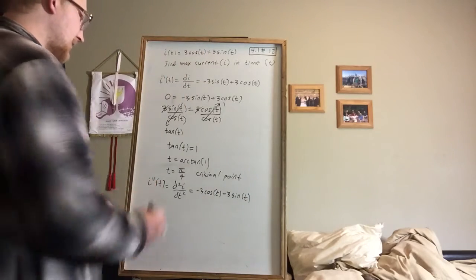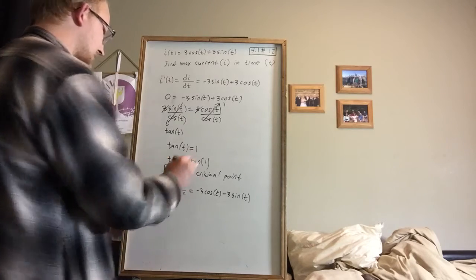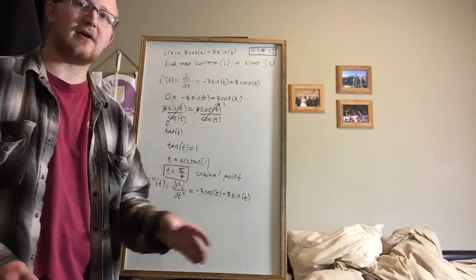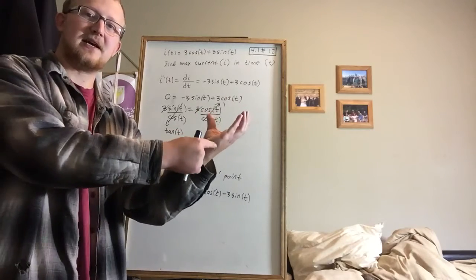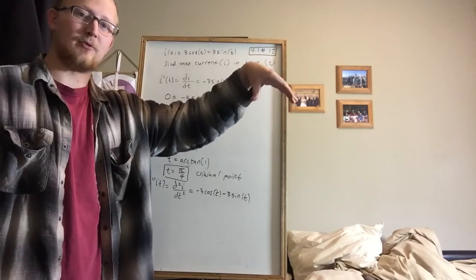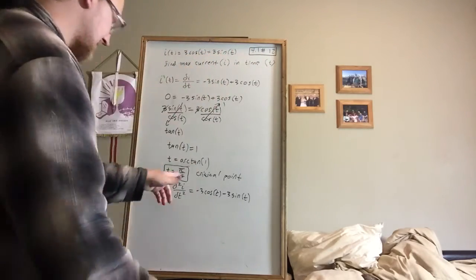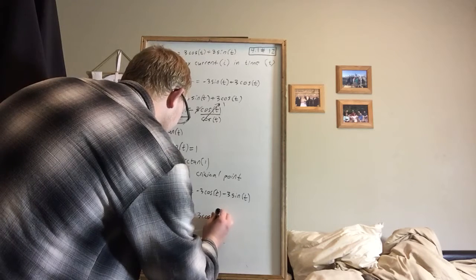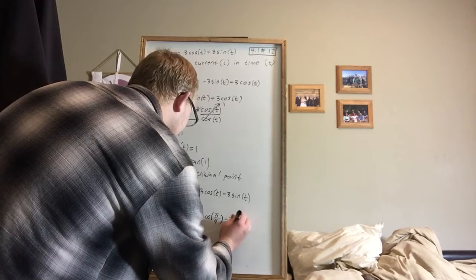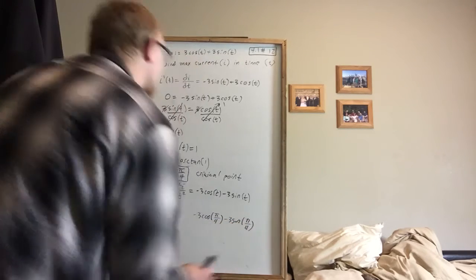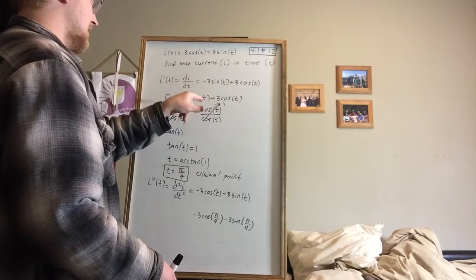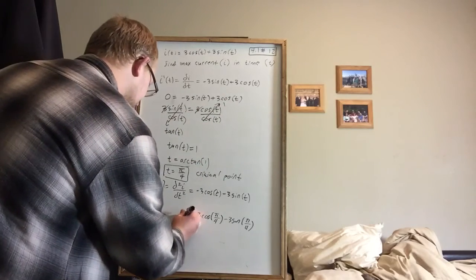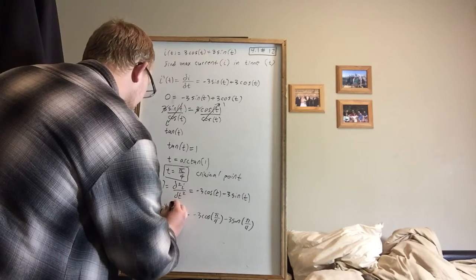So here's our test. If we plug in this critical point of pi fourths into our second derivative of i with respect to time, if we get out a positive number, then it's concavity up, and we're analyzing a minimum point. If it is concavity down or a negative number when we plug in this critical time, then we're looking at a maximum. So let's go ahead and plug in pi fourths. So we have negative 3 cosine of pi fourths minus 3 sine of pi fourths.